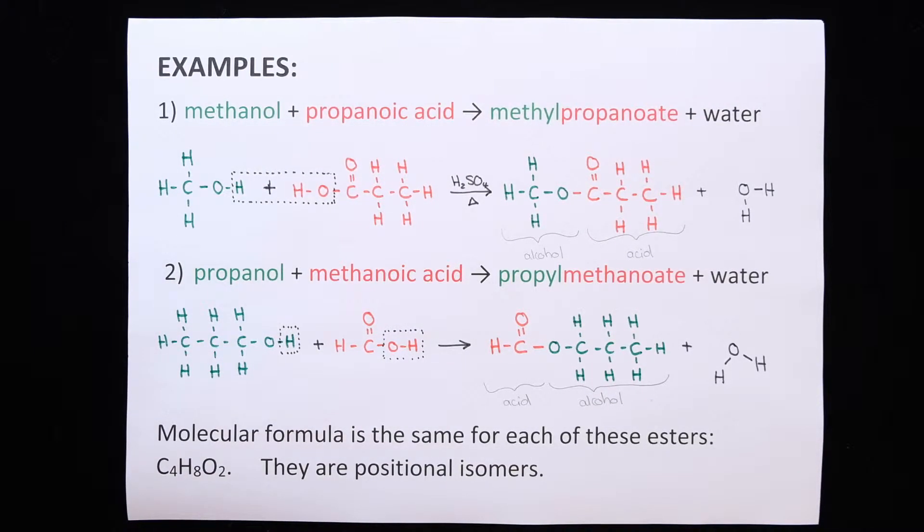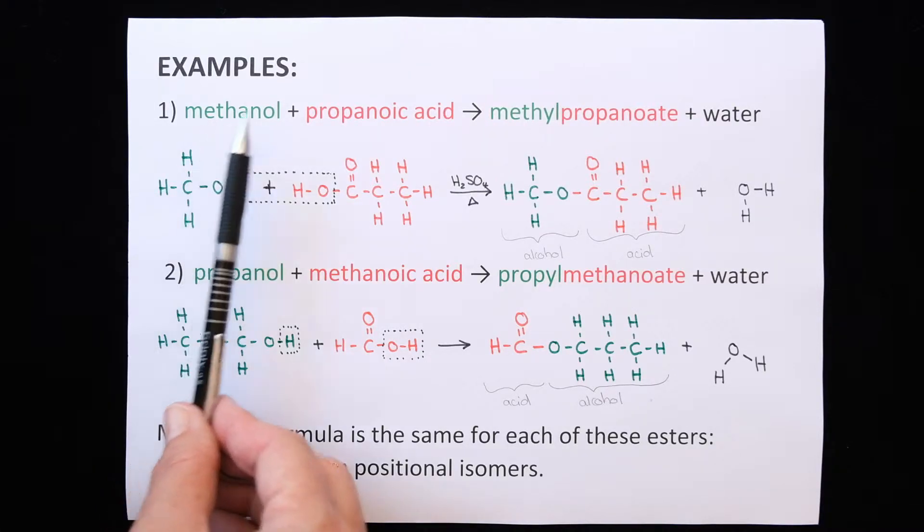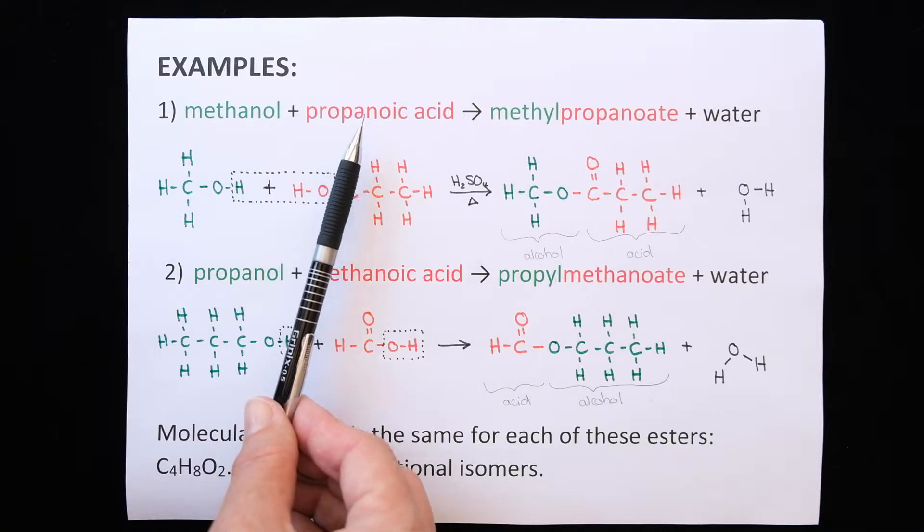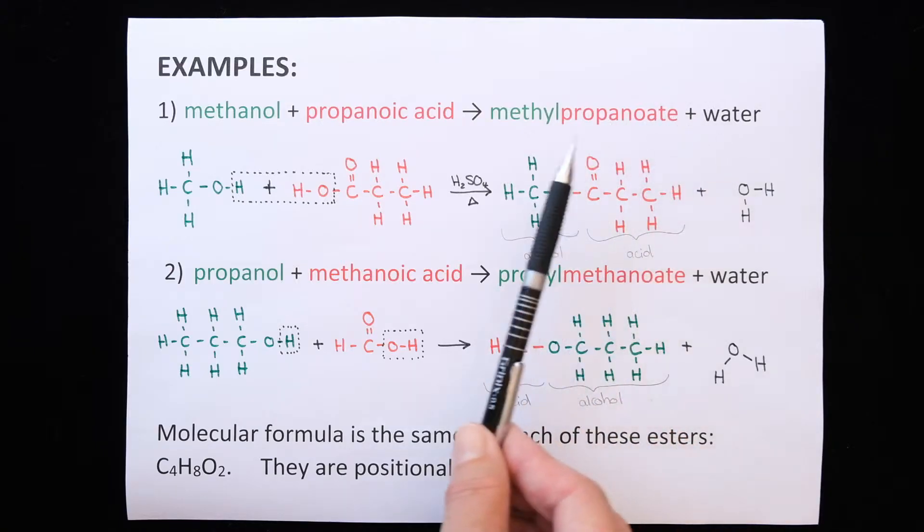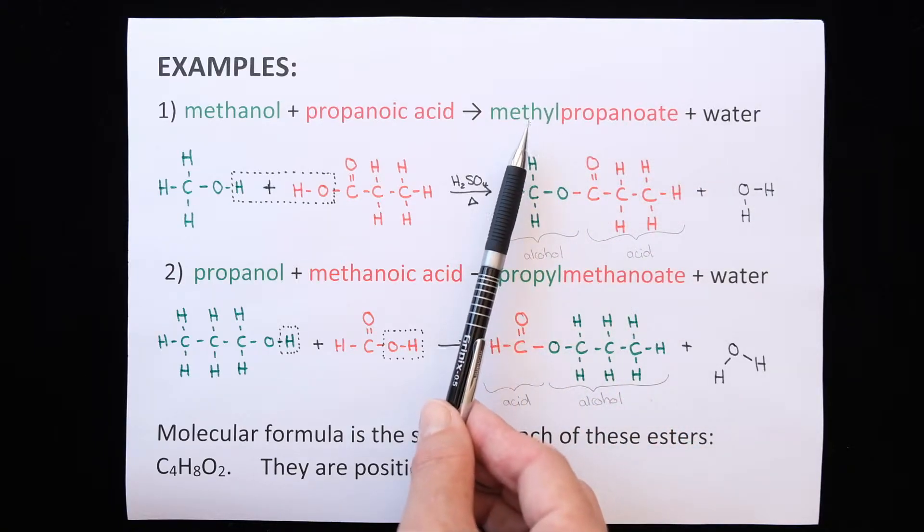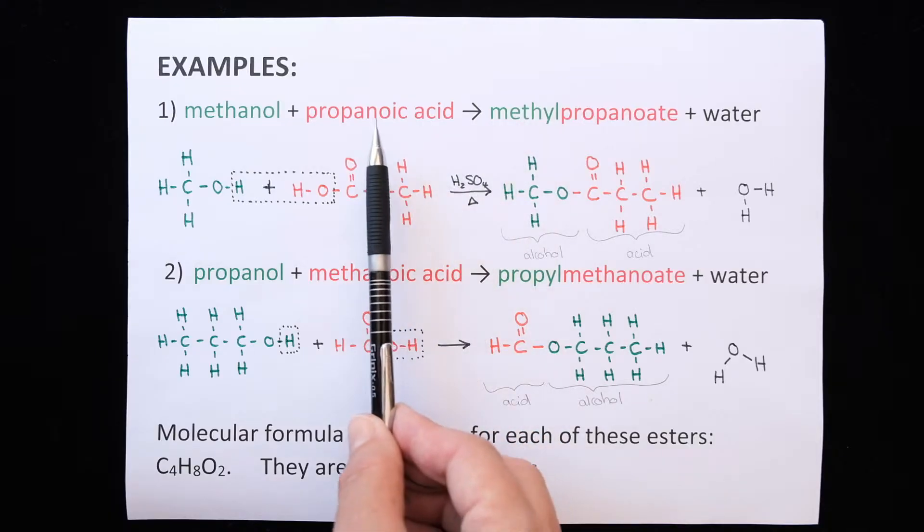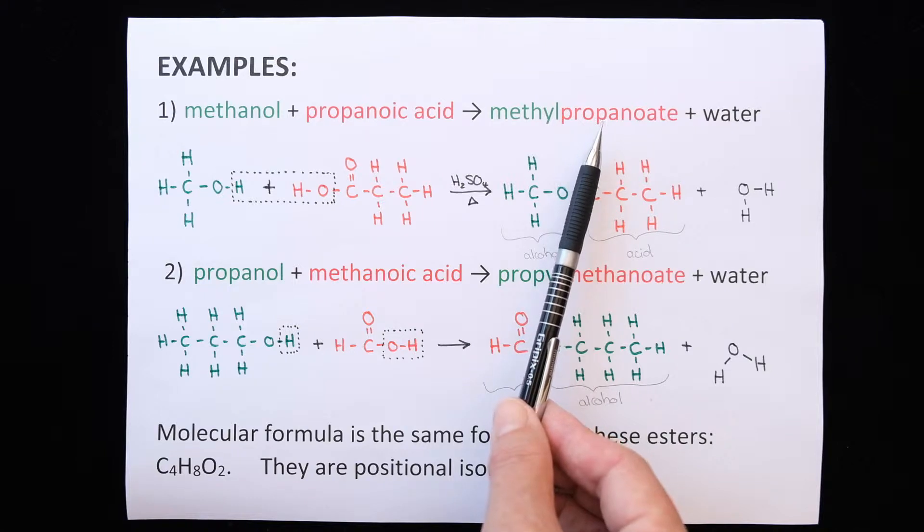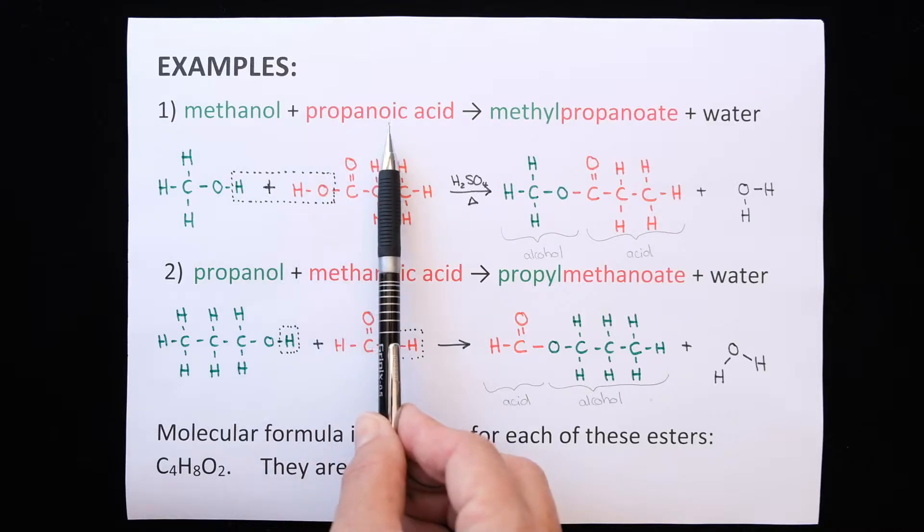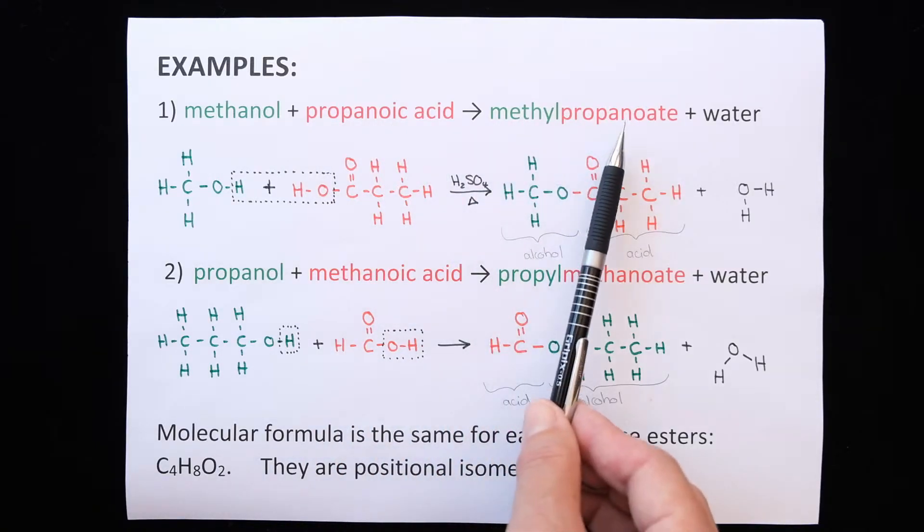We're going to look at two examples. If methanol reacts with propanoic acid, you will form methylpropanoate and water. The first part of the name comes from the alcohol. In this case we had methanol, so the name of the ester starts with methyl. The carboxylic acid is propanoic acid, so the second part of the ester's name is propanoate.